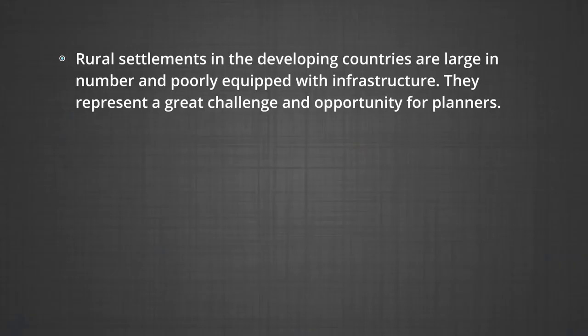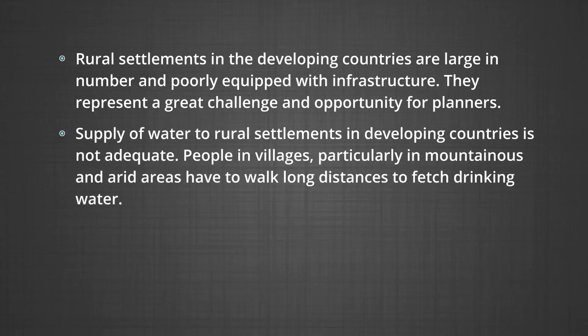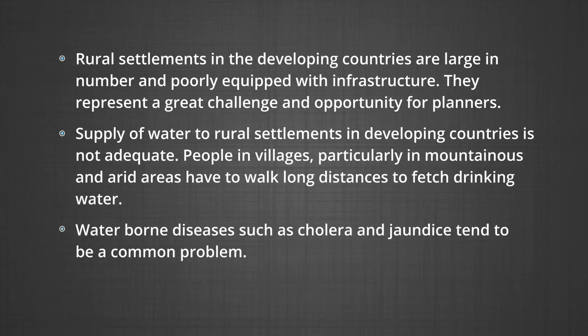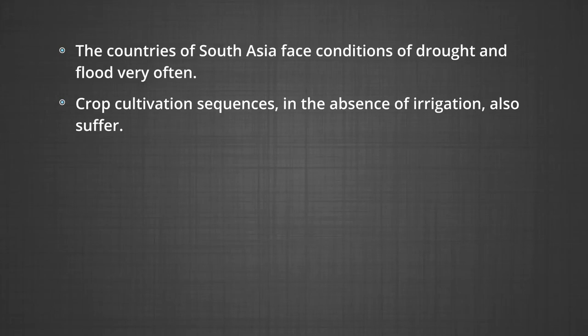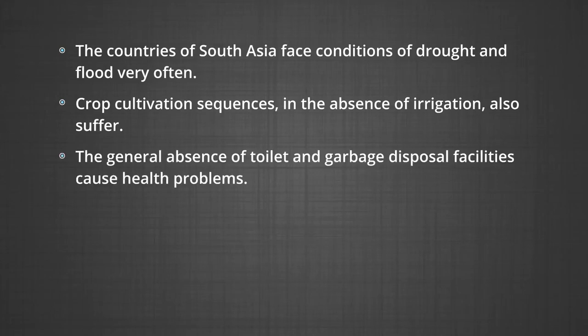Now we are going to discuss the problems of rural settlements. In developing countries, rural settlements are fraught with numerous problems. Some problems are: lack of infrastructure — rural settlements in developing countries are large in number and poorly equipped with infrastructure. Supply of water is not adequate; people in villages, particularly in mountainous and arid areas, have to walk long distances to fetch drinking water. Waterborne diseases such as cholera and jaundice tend to be common problems. The countries of South Asia face conditions of drought and flood very often. The general absence of toilet facilities and garbage disposal facilities cause many health problems.